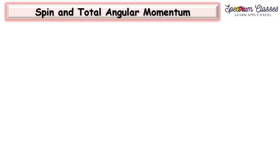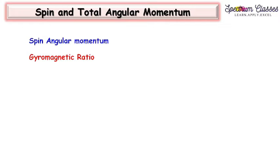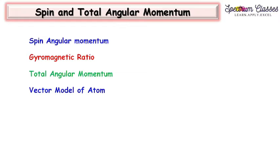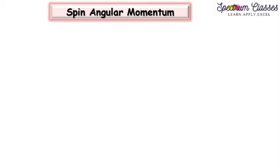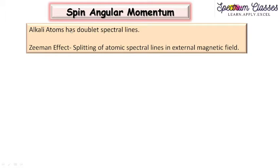Hello everyone, welcome back to Spectrum Classes. Today in this video I am going to discuss spin angular momentum and total angular momentum. This video is in continuation with our previous video in which I discussed orbital angular momentum. In this video we are going to discuss spin angular momentum, gyromagnetic ratio, total angular momentum, and the vector model of the atom.